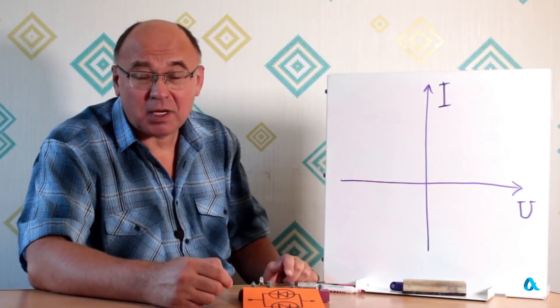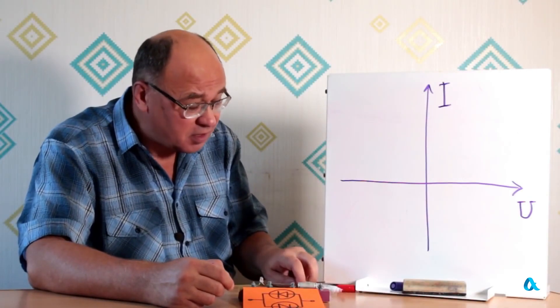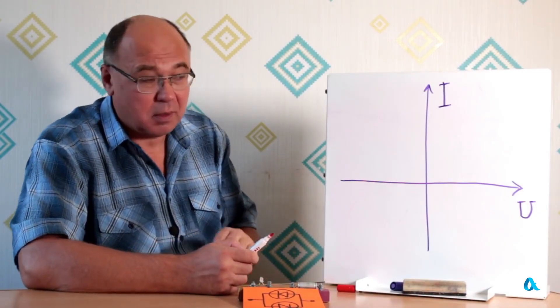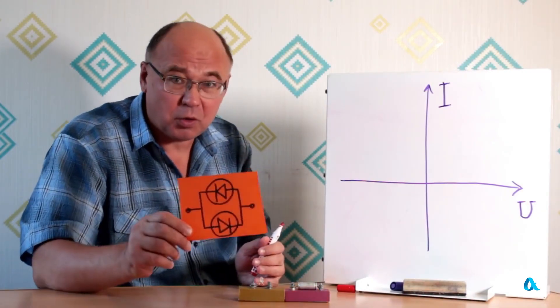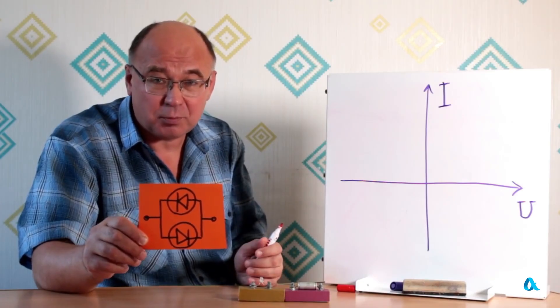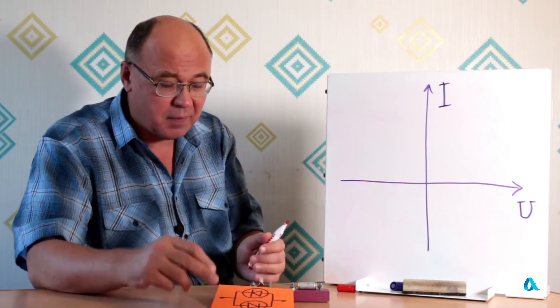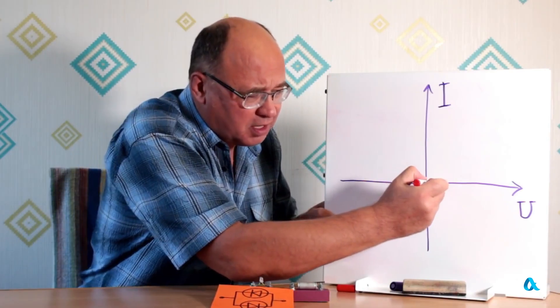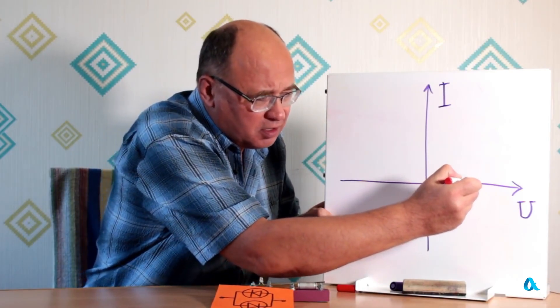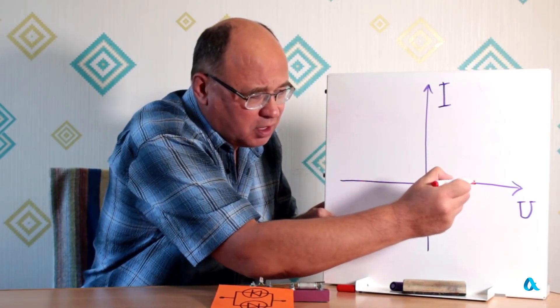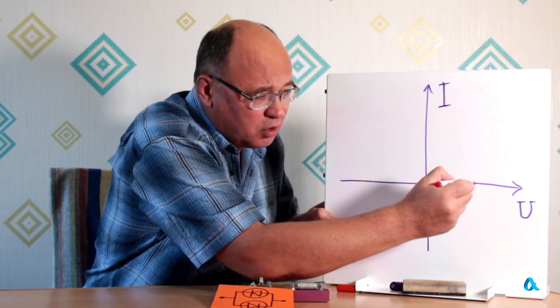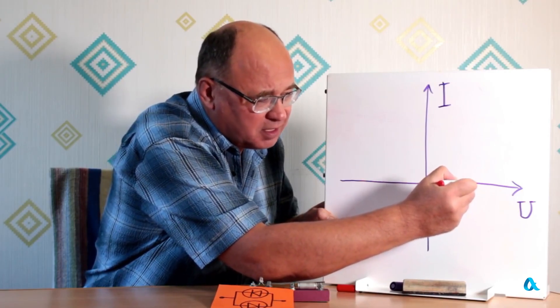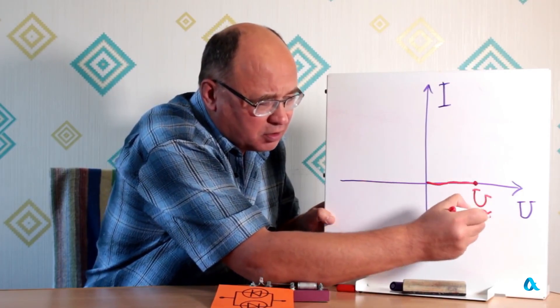And here two ideas come to our aid. The first idea is to construct the current-voltage characteristic of such a section of the circuit with two LEDs placed facing each other. If there were only one LED here, then with forward connection, as long as the voltage is low, the current would be extremely small.